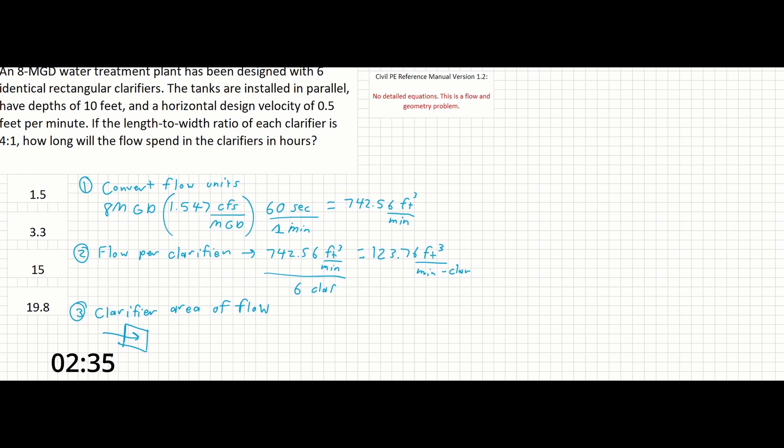The velocity passing through the clarifier is given as 0.5 feet per minute in this problem. And if we look at our dimensions, we could see that this would be the depth D, this would be the width W, and L would be the length.